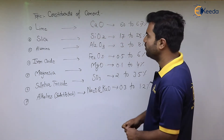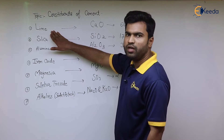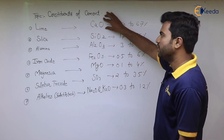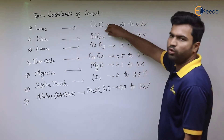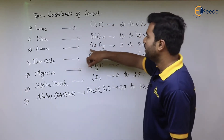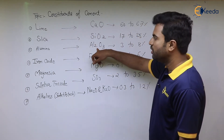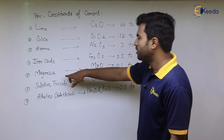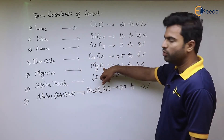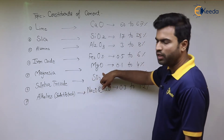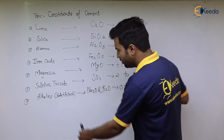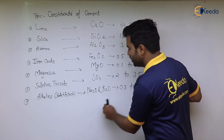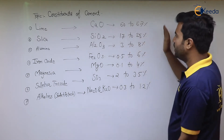The chemical formulas of the constituents are: lime is calcium oxide CaO, silica is SiO₂, alumina is Al₂O₃, iron oxide is Fe₂O₃, magnesia is MgO, sulfur trioxide is SO₃, and for alkalis: soda is Na₂O and potash is K₂O.